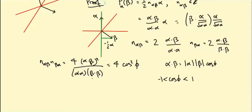So 4cos²φ is between 0 and 4. It could be 0, but it can't be 4.